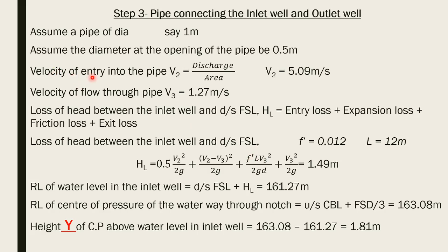The velocity at the pipe opening, v2 = Q / A = 1 / (π/4 × 0.5²) = 5.09 m/s. Then the velocity of flow through the main pipe, v3 = Q / A = 1 / (π/4 × 1²) = 1.27 m/s. The pipe diameter changes from 0.5 m at the opening to 1 m for the rest of the pipe length.